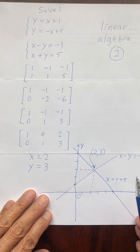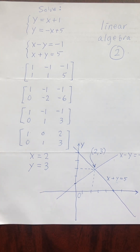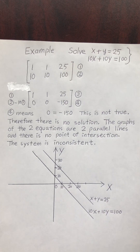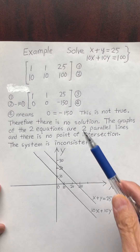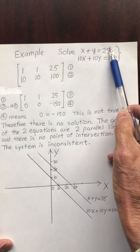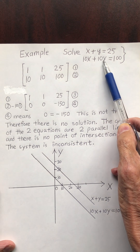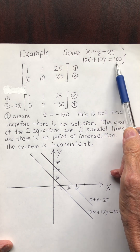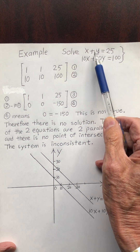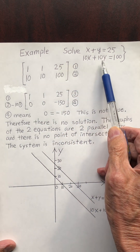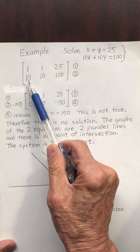Let's have another example. I want to solve this system of equations: x plus y equals 5, and 10x plus 10y equals 100. So the augmented matrix has row 1 as 1, 1, 5 and row 2 as 10, 10, 100.